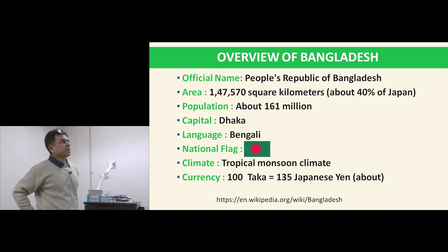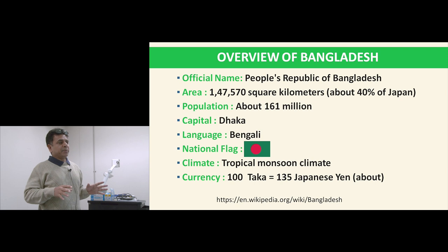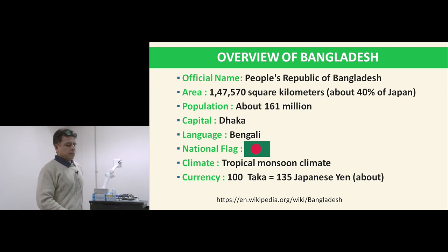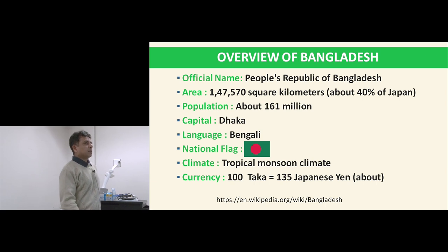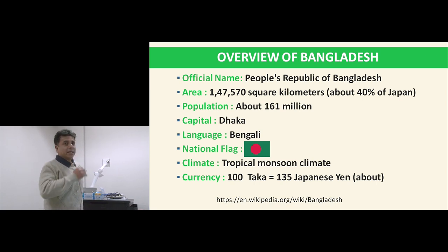This is an overview of Bangladesh. The official name is the People's Republic of Bangladesh. The area is 147,570 square kilometers, about 40% of Japan, but the population is very high — around 161 million. The capital is Dhaka. The language is Bengali. The national flag has a red circle on a green background — green represents the green land, and red represents the blood of the 3 million people who died during liberation. The climate is tropical monsoon — no snow like Japan. The currency is 100 taka, equal to about 135 Japanese yen.